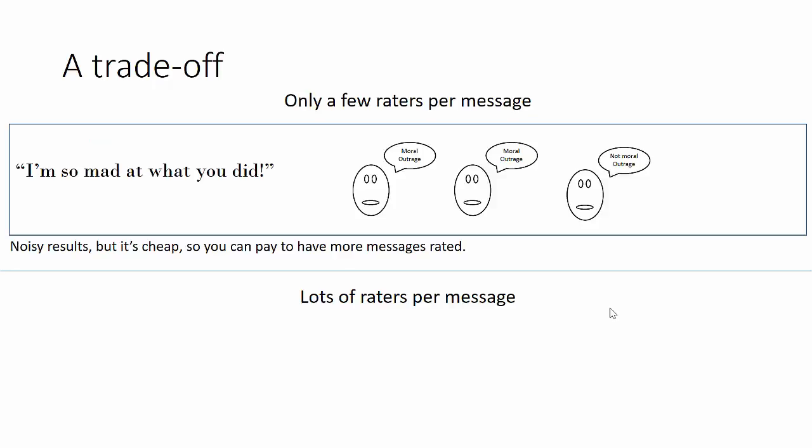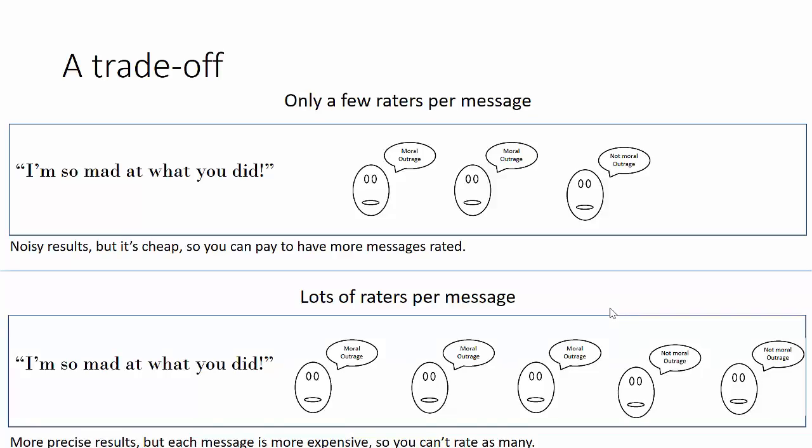More messages being rated, or more raters per message. The advantage of more messages is that you have a wider range of language with labels. The advantage of more raters per message is that you're more certain of the labels that you get. Although the precise answer depends on what you're rating, it's usually better to have more messages than more raters per message. That is, noisy labels of a wide range of language is more useful than precise ratings of a smaller range of language.